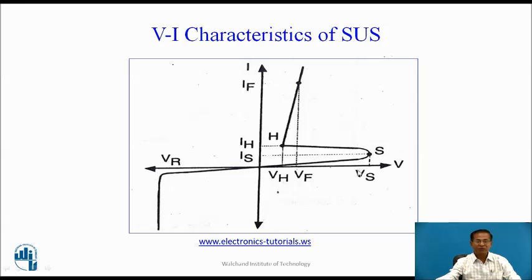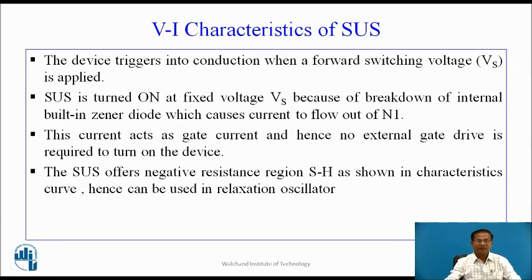If input voltage is less than VS, SUS remains in OFF state. The device triggers into conduction when a forward switching voltage VS is applied. SUS is turned on at fixed voltage VS because of breakdown of internal built-in zener diode, which causes current to flow out of N1. This current acts as a gate current and hence no external gate drive is required.